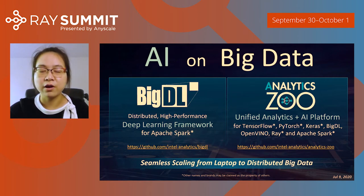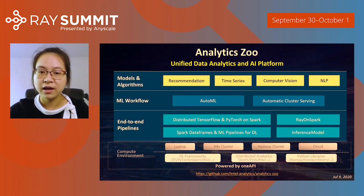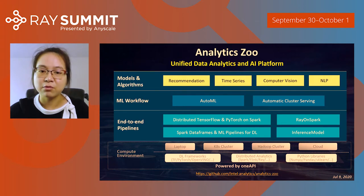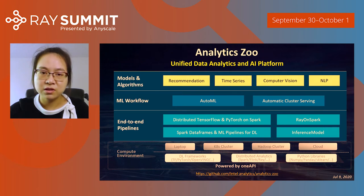With Analytics Zoo, we are able to provide end-to-end unified pipelines to our users. Analytics Zoo integrates low-level deep learning frameworks like TensorFlow and PyTorch, as well as distributed frameworks like Spark, Flink, and Ray. Analytics Zoo can be run on your laptop and, without any code change, it can also be run on your big data cluster — your Kubernetes cluster, Hadoop cluster, or Spark cluster.